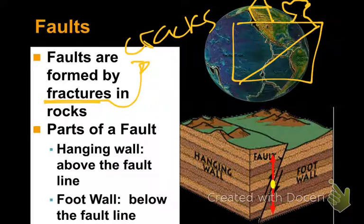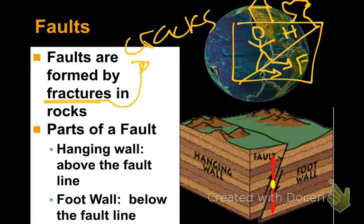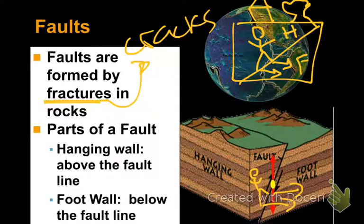The hanging wall is the part above the fault line. If you draw a little stick figure standing on the fault line, they are standing above the fault line — therefore they are standing in the hanging wall, and their feet are pointing down to the foot wall. So if you draw a little person standing on the fault line, their head is within the hanging wall and their feet point down to the foot wall.